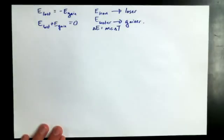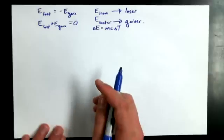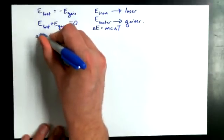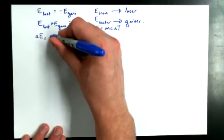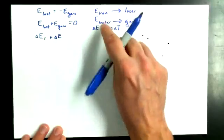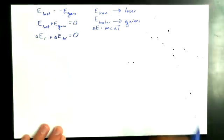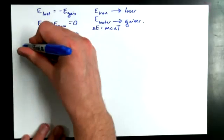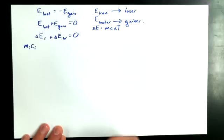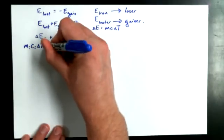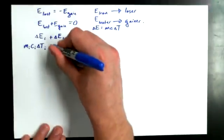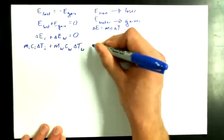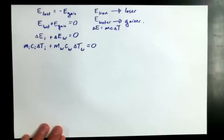I want to say, instead of saying energy lost and energy gained, I want to make use of this idea that change in energy is equal to mc∆T. Instead of saying energy lost, I'm going to say ∆E for iron plus ∆E for water is equal to zero. And I could even expand it further. I could use this equation now and I could say the mass of iron times the heat capacity of iron times the ∆T for iron, plus the mass of water times the heat capacity of water times the ∆T for water, is equal to zero.